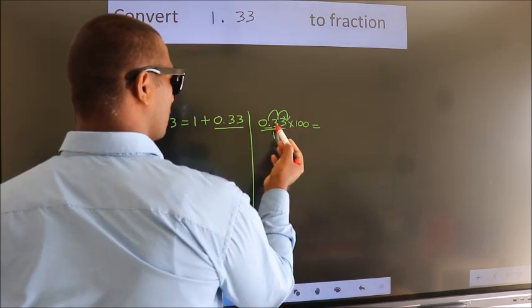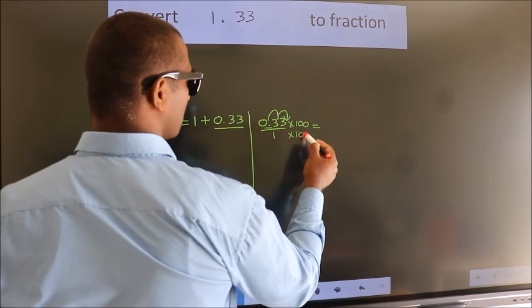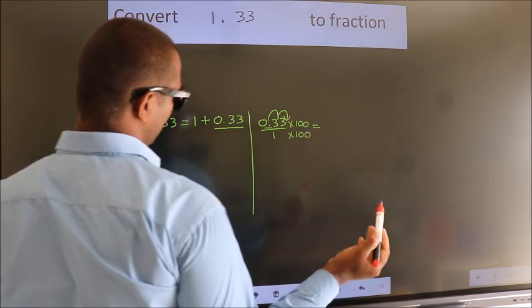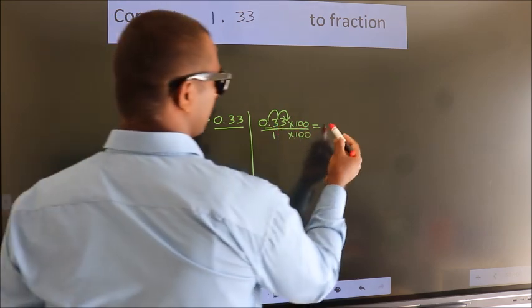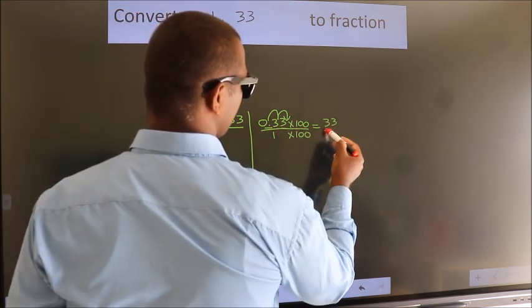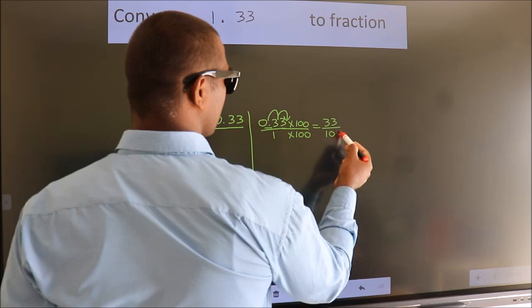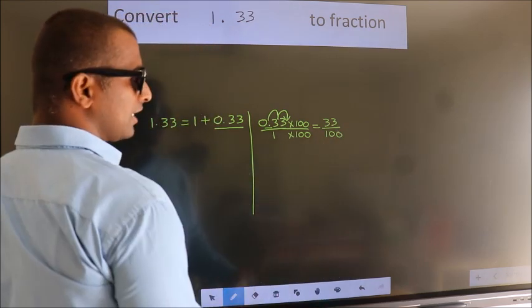Whatever we are doing in the numerator, in the denominator also we should do the same. Next, 0.33 into 100 is 33. 1 into 100 is 100. This is the fraction we got.